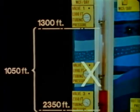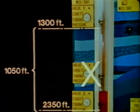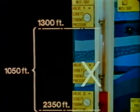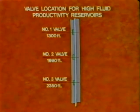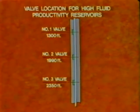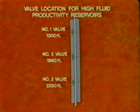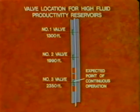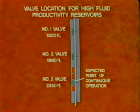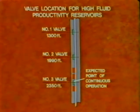Consequently, the well cannot be unloaded to valve number three and must produce with less reservoir drawdown and a resulting lower rate from the valve above. The location of the operating valve through which we will continuously inject gas is extremely important in a well where the fluid productivity of the reservoir is high. In such a well, valves near the expected point of continuous operation should be spaced close together to assure operating from the lowest point which the injection gas pressure and reservoir production will permit.